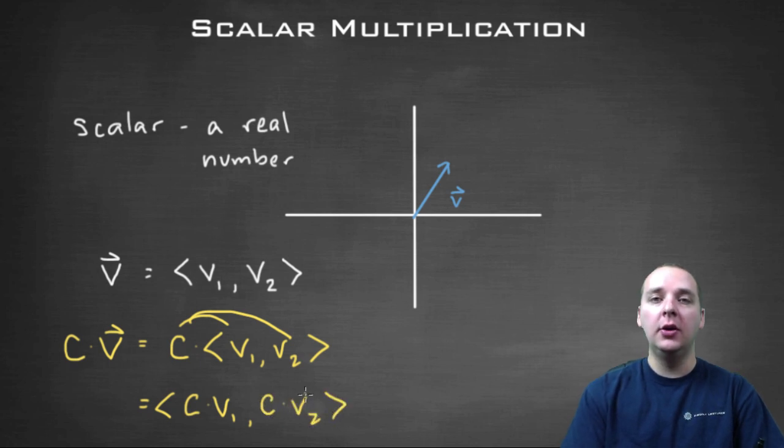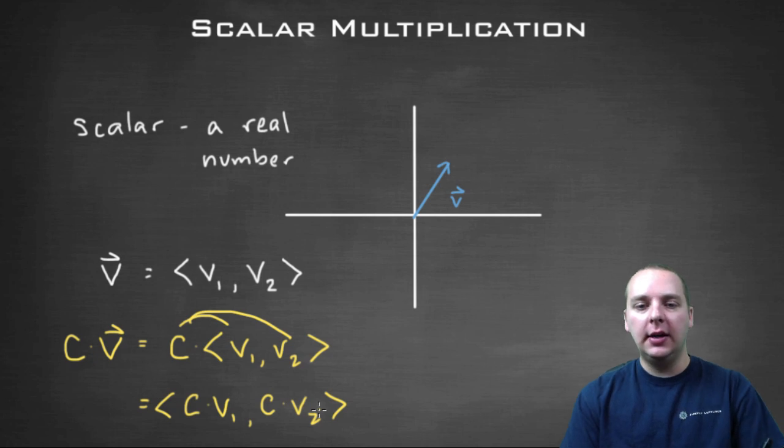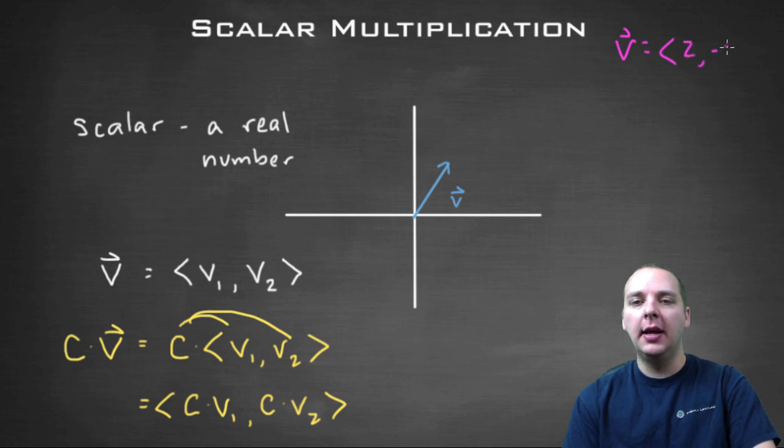And then that will give you a new vector. So here in the corner, I'll do a quick example. Let's say your vector v was the vector <2, -3>. Well, if you took two times the vector v, then this would be <4, -6>.